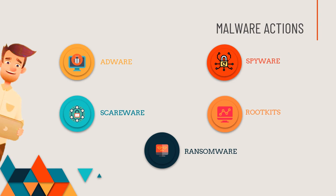To recap: software attacks involve using any kind of program or application for malicious purposes. Malware is software with malicious intent that can steal your data, alter your system, or erase data from your computer system. Different infection methods include viruses, worms, Trojans, zombies, and botnets. Malware actions include adware, spyware, scareware, rootkits, and ransomware.